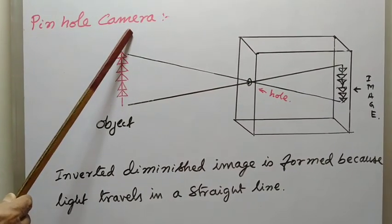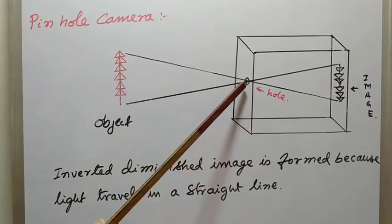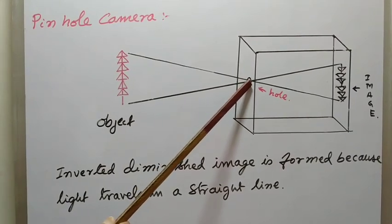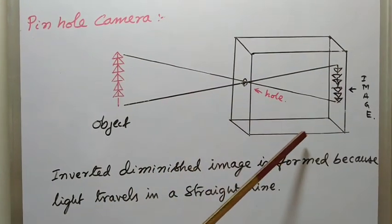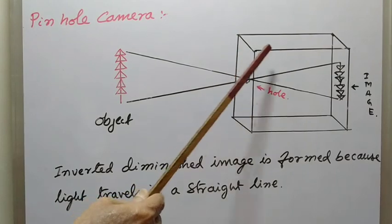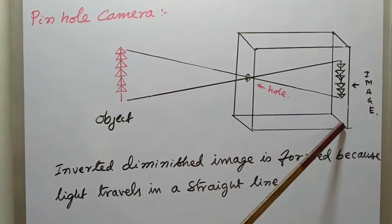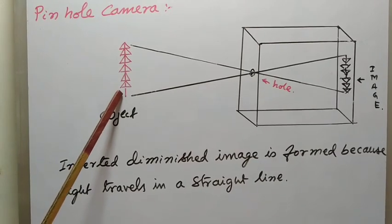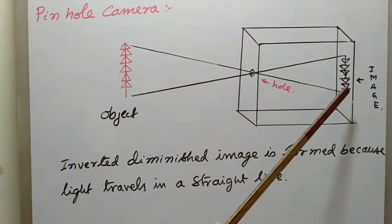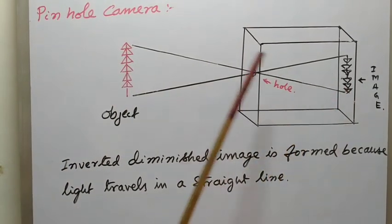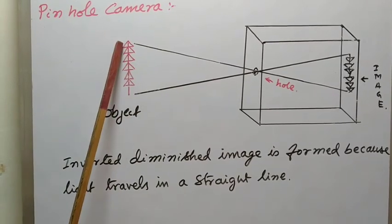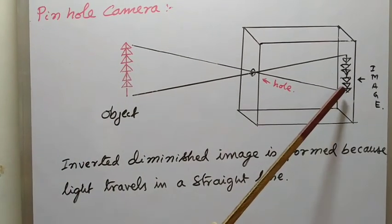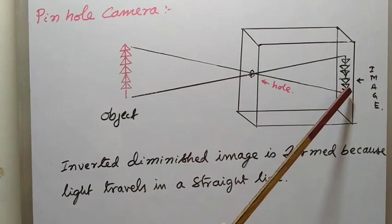Pinhole camera: this is a small hole in a cubic box, that is the screen, here is an object and this is the image. If the object is erect, an inverted, diminished image is formed on the screen.